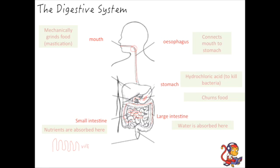The food is then stored in the rectum, which is down here. As the food travels down the large intestine all the water is being removed and it ends up being stored as faeces in the rectum. After the rectum you reach the anus — everyone knows what happens there — and the faeces leaves the body.